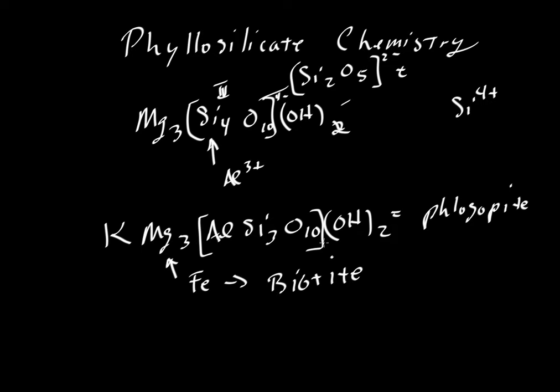Phlogopite is a case where we've put in some aluminum into the tetrahedrally coordinated site in place of silicon. If we replace one out of four of the silicon, so one-fourth of all silicon atoms are replaced with aluminum, then we would have room to put in one potassium per formula unit. The pure magnesium case is phlogopite, add some iron solid solution and we would have biotite.